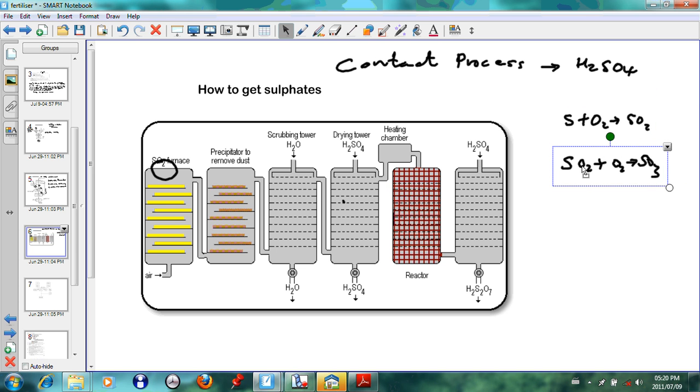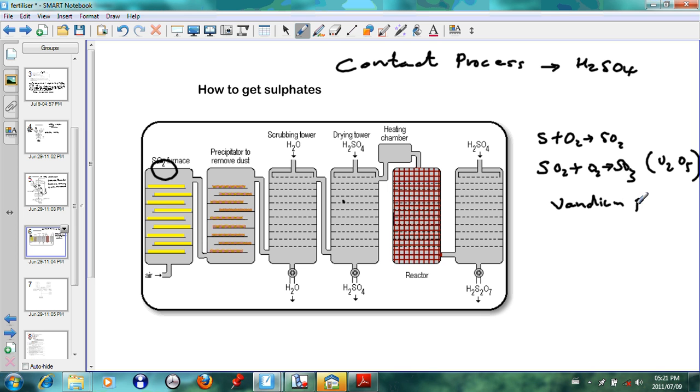Thereafter we see that the SO3 that is formed—this takes place incidentally—SO2 plus O2 reacts with O2 in the presence of a catalyst. The catalyst that is used there, we just write it on the side so we don't forget. The catalyst that is used here is V2O5, which is actually called vanadium pentoxide. Vanadium pentoxide, five oxygens, and that's the reason it is called the contact process because it takes place in the presence of a catalyst, and that most probably will take place in this particular tower.